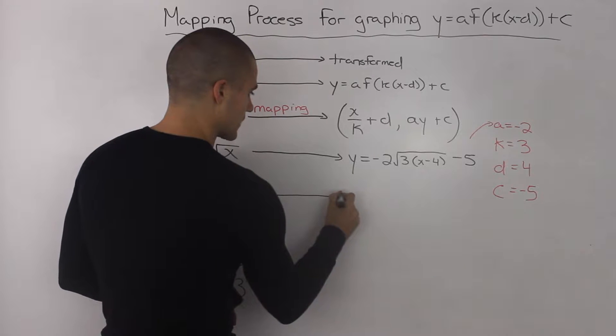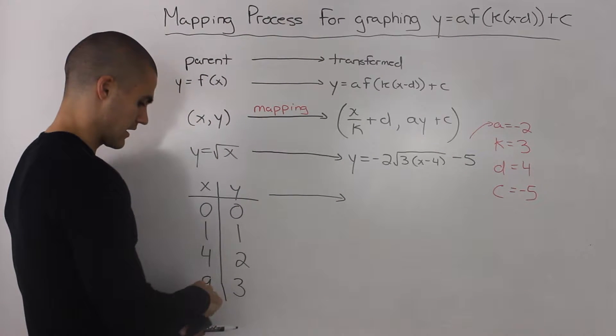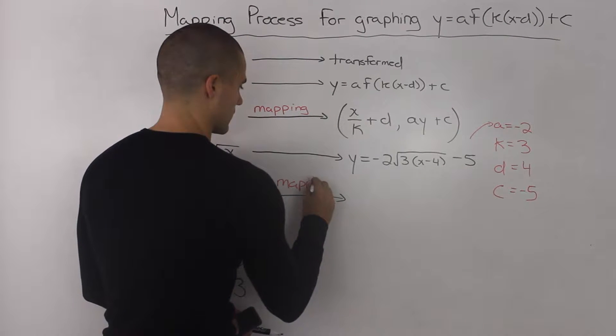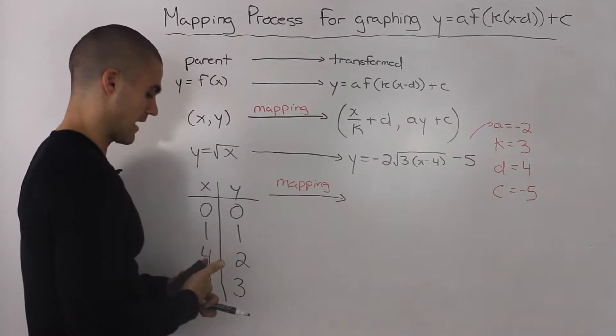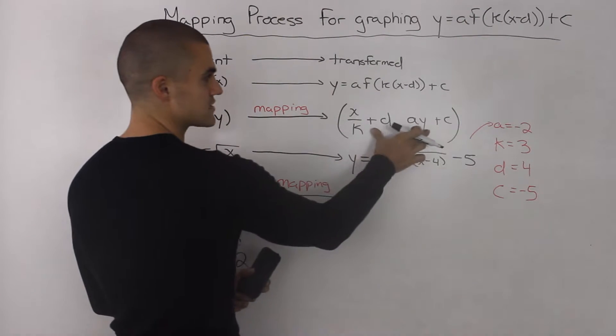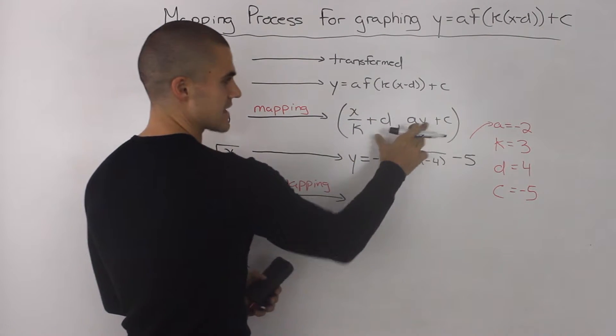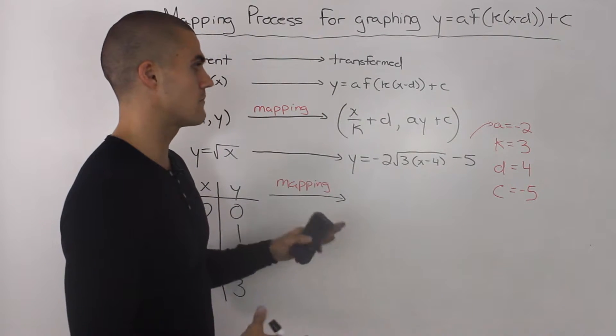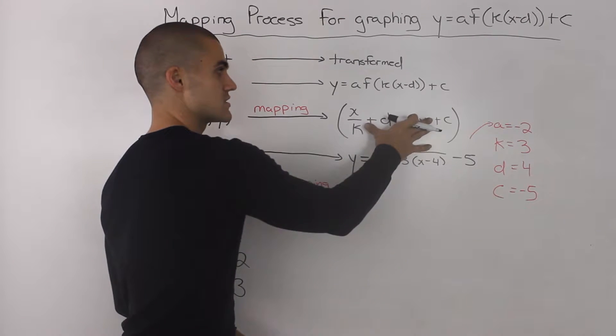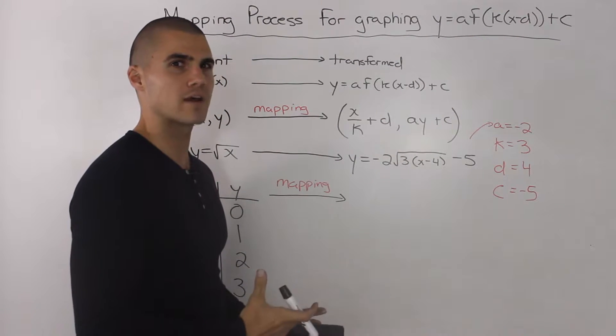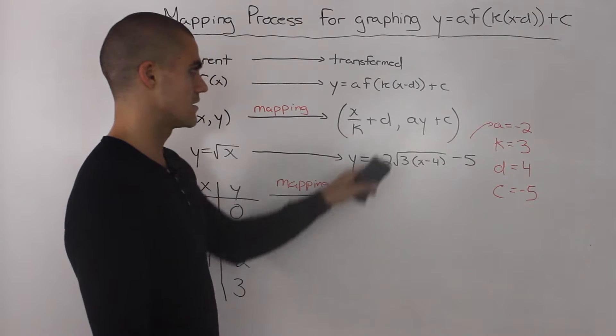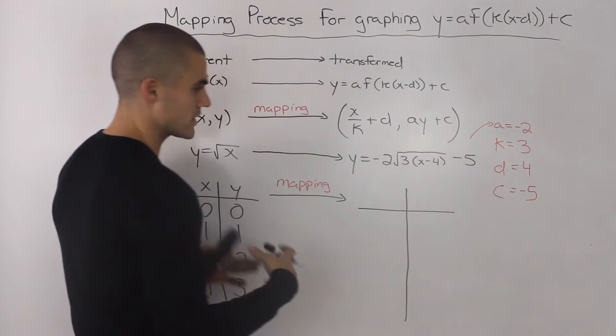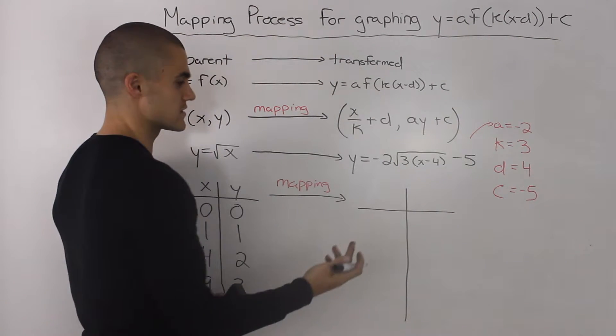Now, what we're going to do is take each of these points and put them through a mapping process. In order to do that, we have to apply this formula here: x over k plus d and a y plus c. This formula here is the mapping process formula and you're just going to have to memorize it. Don't try to make sense of it. I know memorizing stuff in math is usually not good advice, but trust me when I tell you to do so.